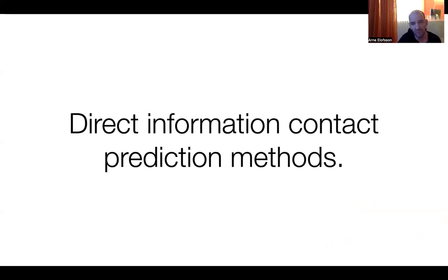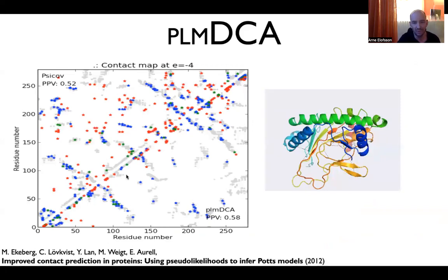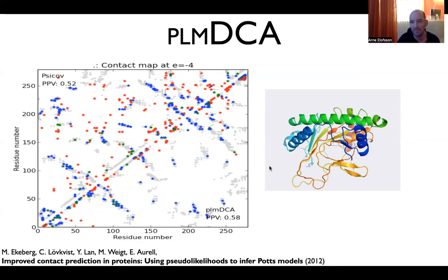You can use these contact prediction methods to predict distances and contacts. This is an example showing two different methods — one called CCMPRED and one called PLM-DCA — trying to predict contacts. The gray dots represent contacts in the native protein structure; the blue are correct predictions and the red are incorrect predictions from these two methods. As you can see, many of these contacts are predicted correctly — enough to be able to make a good model of a protein, as indicated by the arrows here.